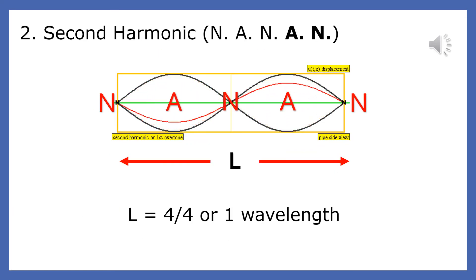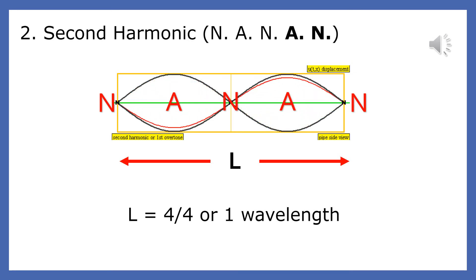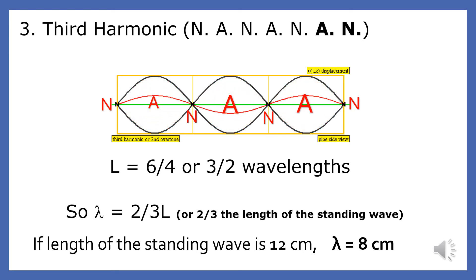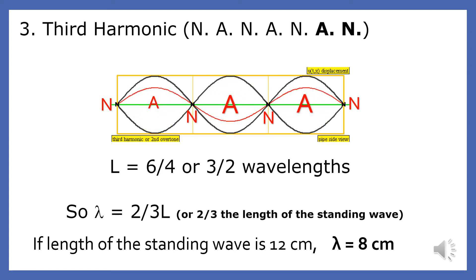The second harmonic is created by a source vibrating at twice the frequency of the fundamental. This standing wave also has twice the number of antinodes. Since it is one wavelength wide, the wavelength is exactly equal to the length of the standing wave, or L. The third harmonic is created by a source vibrating at three times the frequency of the fundamental. The standing wave also has three antinodes. Since it's three-halves wavelengths wide, the wavelength equals two-thirds the length of the standing wave. If the length of the standing wave is 12 centimeters, then the wavelength would be 8 centimeters.